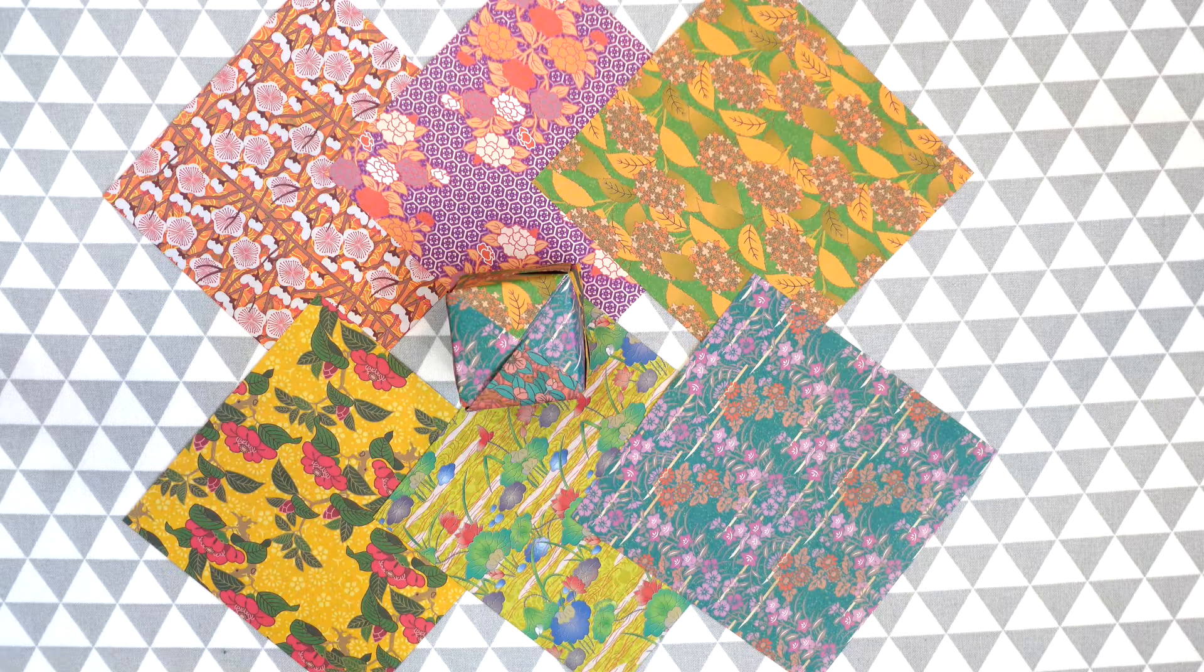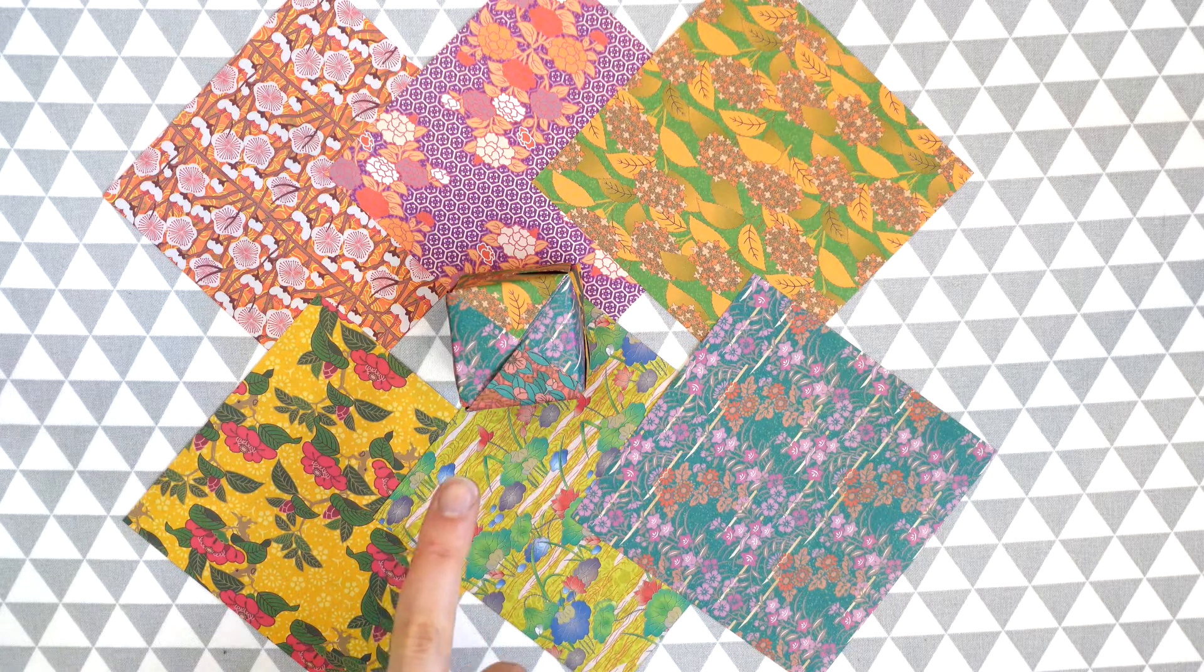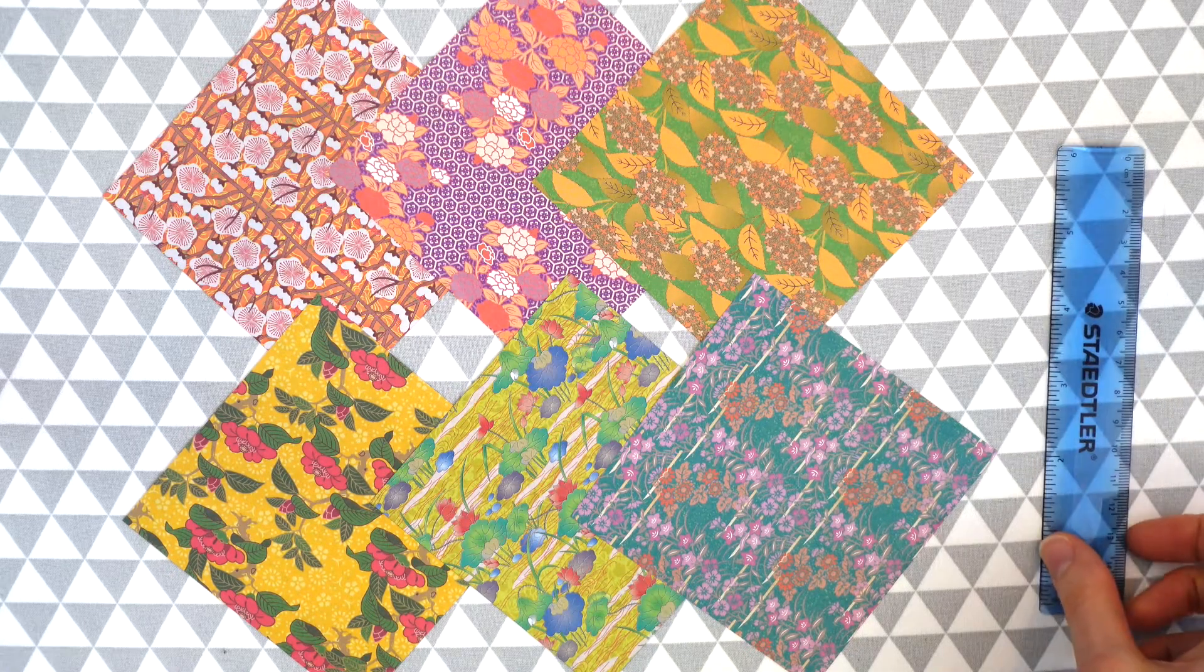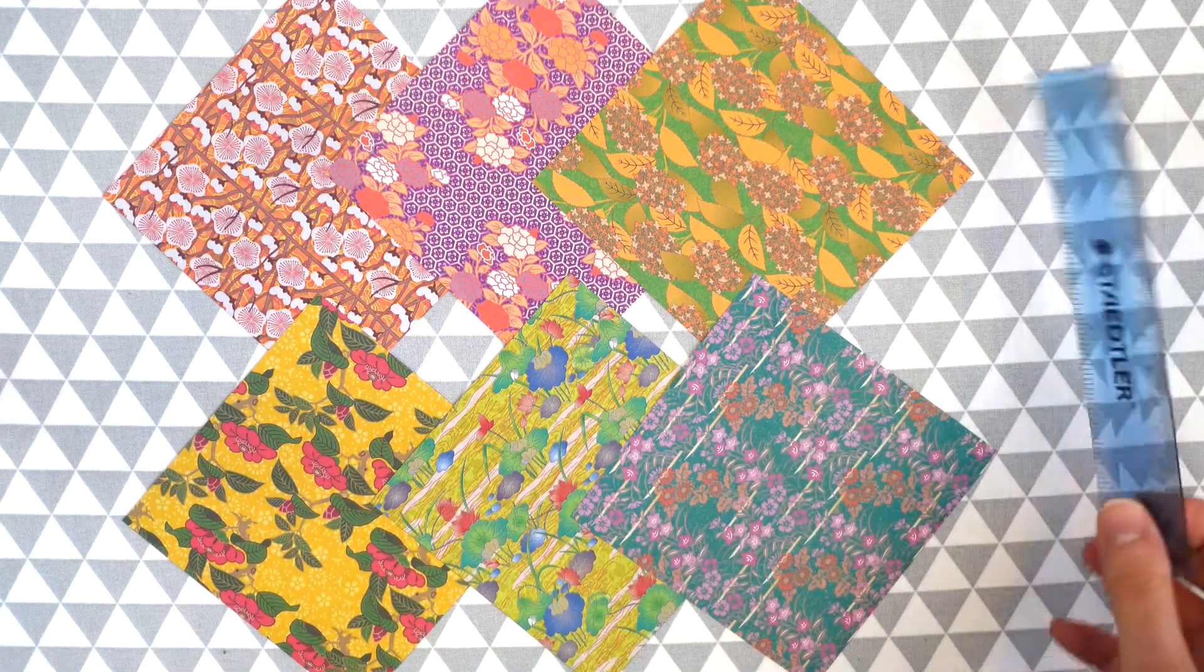First we will make a paper cube by using origami, the one you see right here, and then we are going to measure our real-life cube and find its volume. Before we start, be sure to have six sheets of origami paper like you see right here and a ruler.